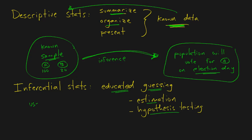So with inferential statistics, we use known data to estimate or predict what will happen in the larger population.